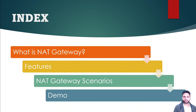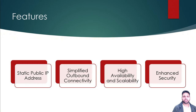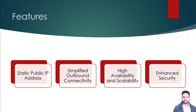The first feature is static public IP address. During the creation of NAT gateway you provide the public IP address to it. When you use NAT gateway for outbound connectivity to the internet, applications on the internet will always see the public IP address of your NAT gateway for all traffic coming through it. So if whitelisting has to be done on those applications, they need to whitelist only the public IP address of the NAT gateway.